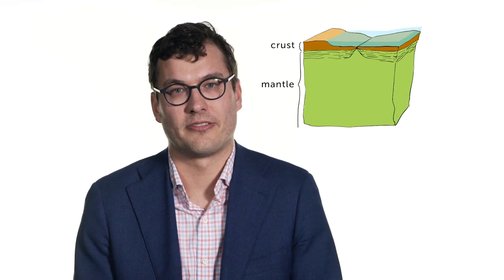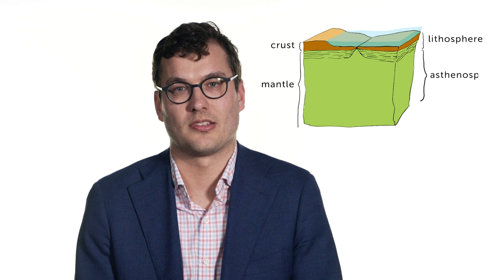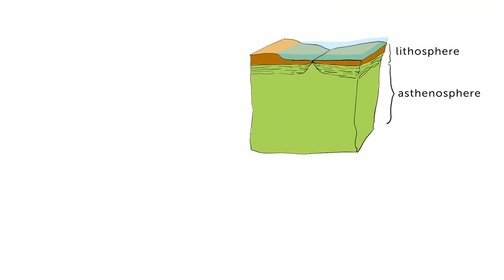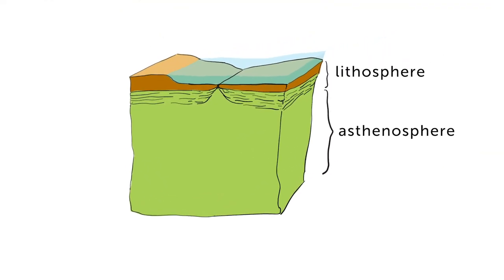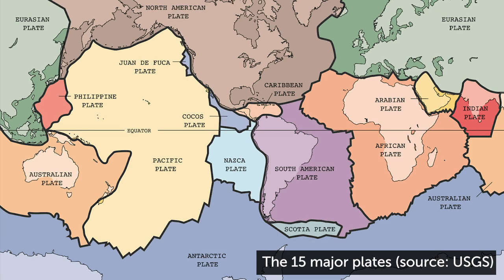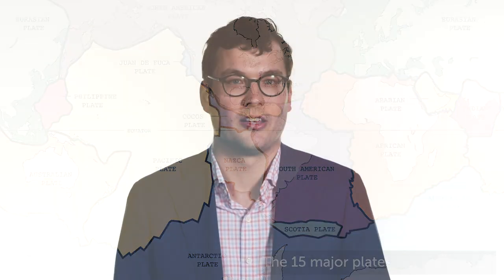The crust and mantle are differentiated by their chemical composition. Since we will be talking about mechanical properties of these rocks, let's look at the distinction based on their response to stress: lithosphere and asthenosphere. The lithosphere is formed by the crust and the uppermost mantle — it is the rigid outer layer of the Earth. The lithosphere is segmented by fault zones into tectonic plates which float on top of the asthenosphere, the hotter and weaker part of the upper mantle that mechanically decouples the lithosphere from the underlying convecting mantle.